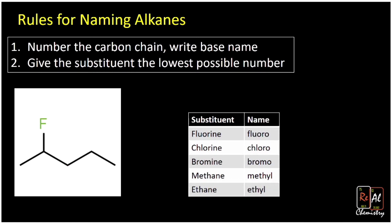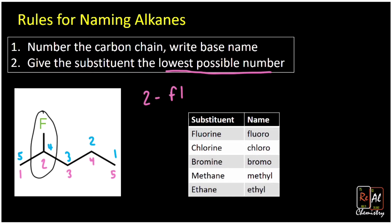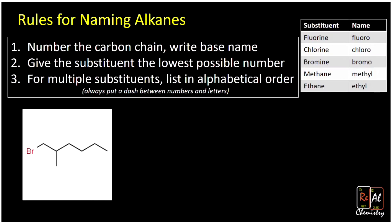We numbered the carbons one through five left to right, but if we numbered right to left we'd get different numbers. Which is correct — is the fluorine on carbon four or carbon two? That's why we have rule two: always give the substituent the lowest possible number. So this molecule is named 2-fluoropentane. We always put a dash whenever we go from a number to a letter.